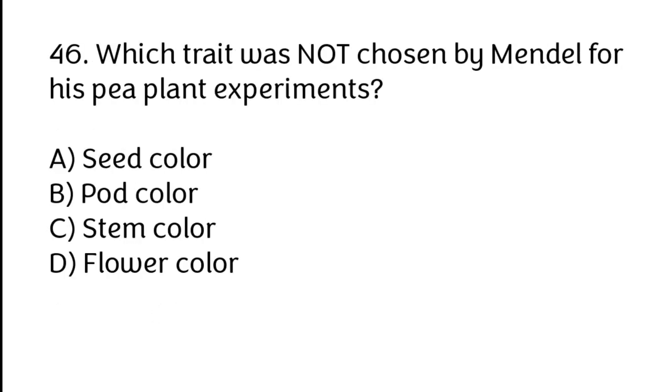Which trait was not chosen by Mendel for his pea plant experiments? Correct answer is C. Stem color.